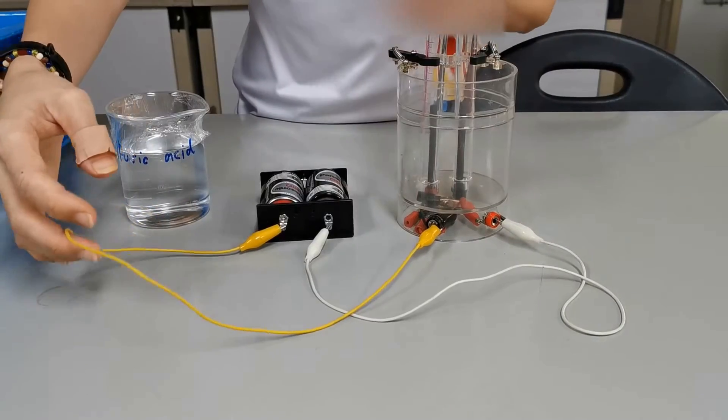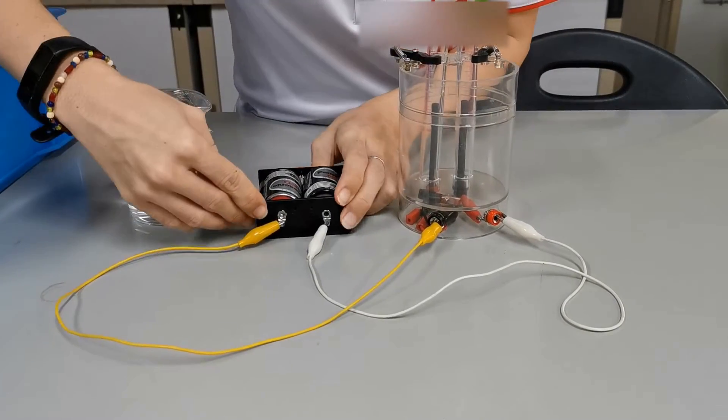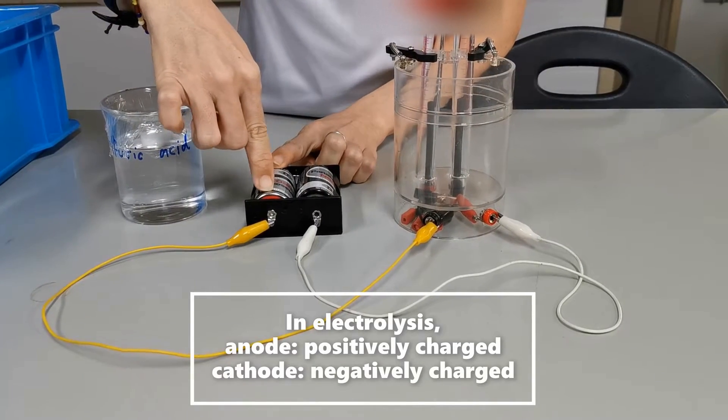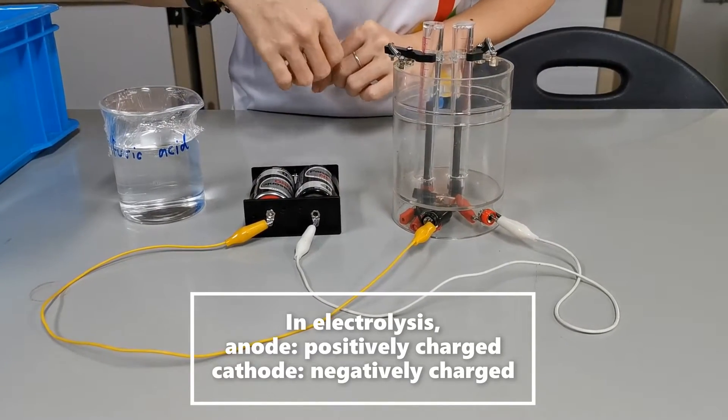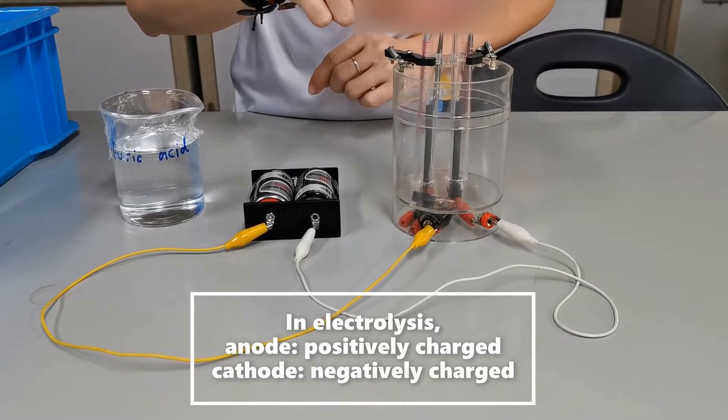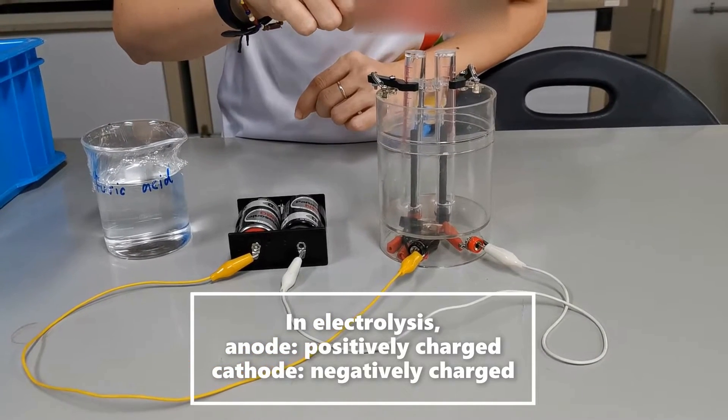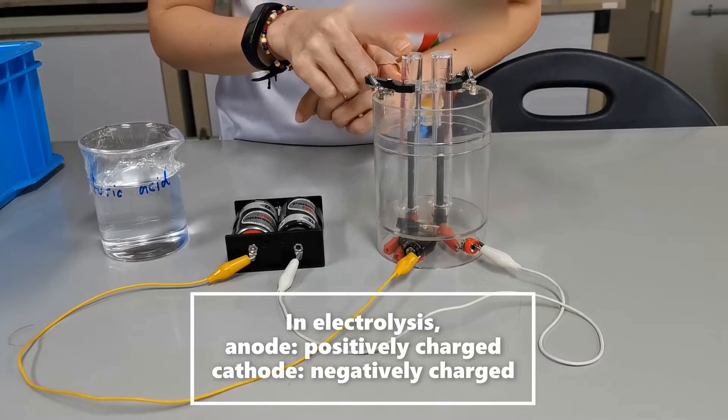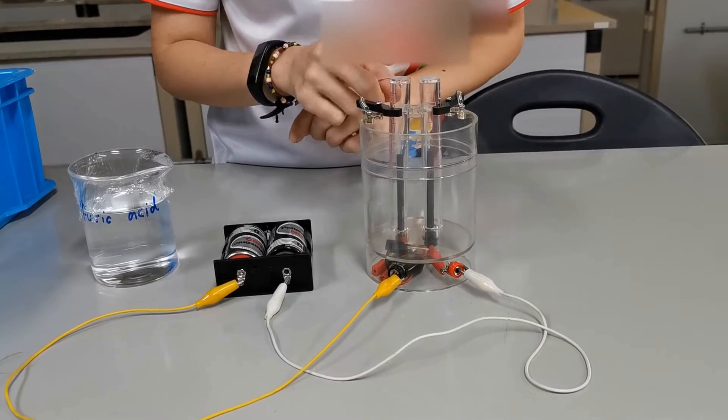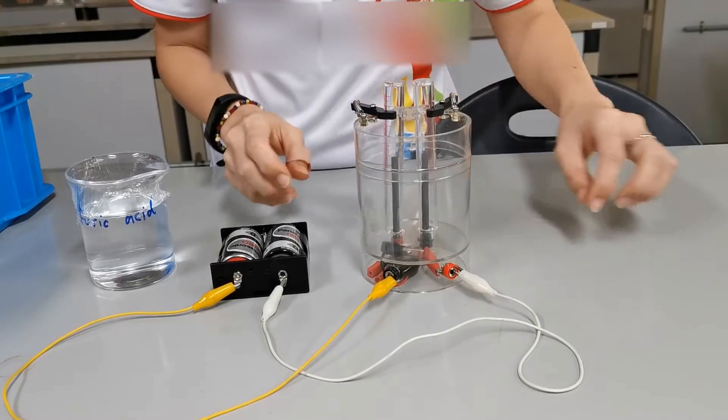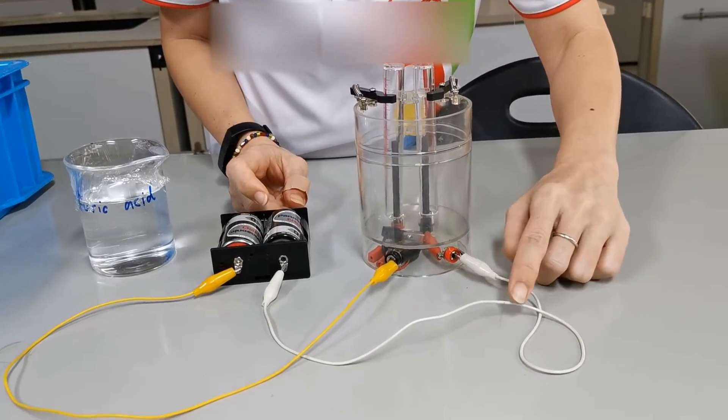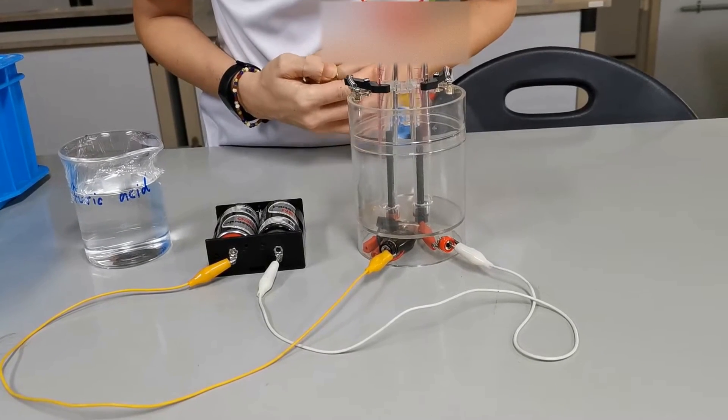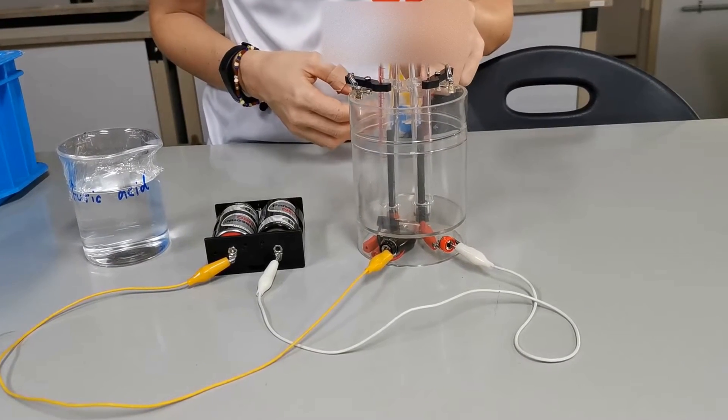The electrode that is connected to the yellow cable is positively charged because it's connected to the positive terminal of the battery, so this is going to be our anode. Positively charged electrodes are called anodes because they attract anions. And the electrode that's connected to the white cable is negatively charged, so we call this our cathode.